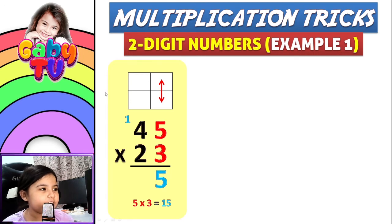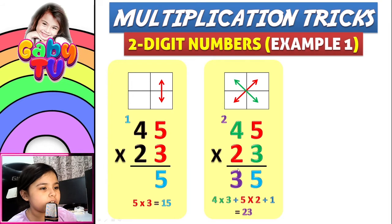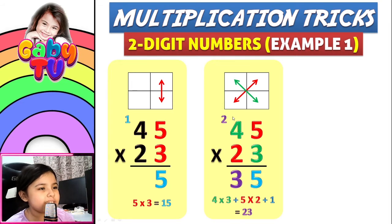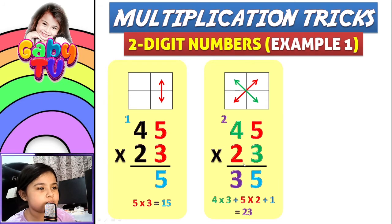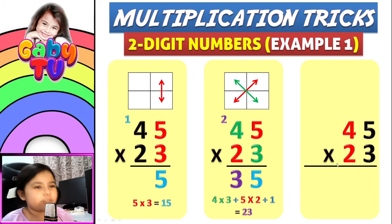Step two: we have to multiply the green numbers and also the red numbers. Four times three plus five times two, plus one — the one came from here — equals 23. So you put three here and you put two on top.